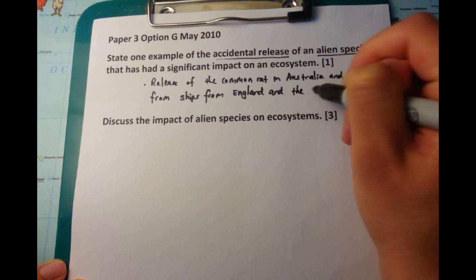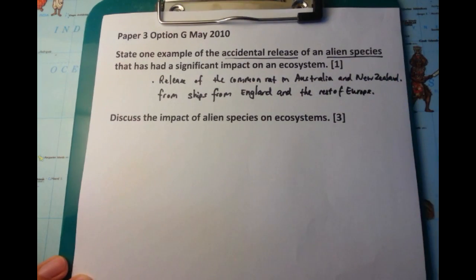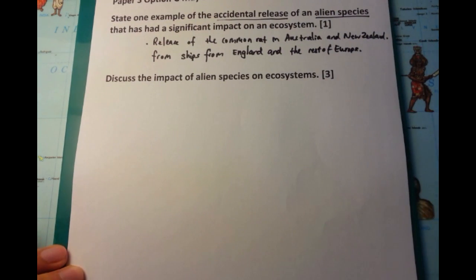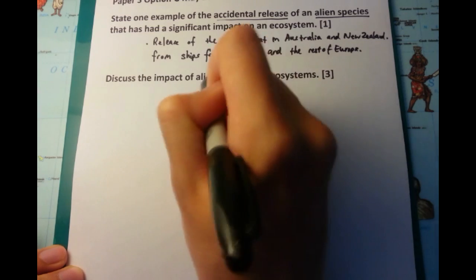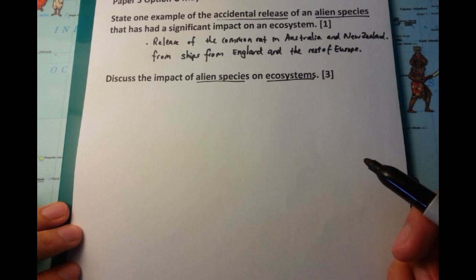The important thing is that you need to talk about a named example. It's not good enough to give an unnamed example, and you also want to talk about something which has an accidental release, not something which was purposely released.